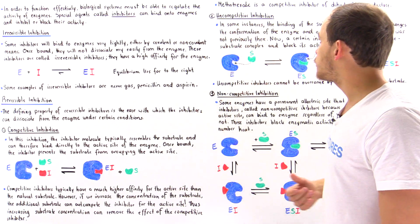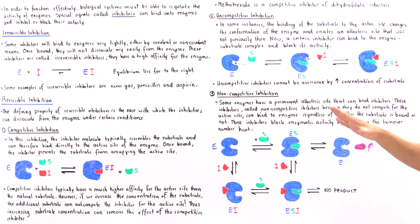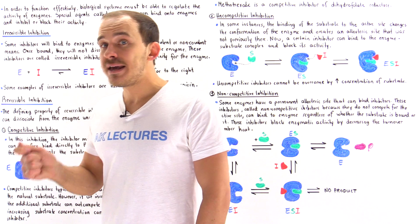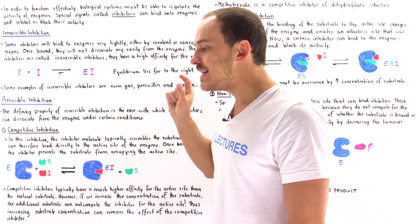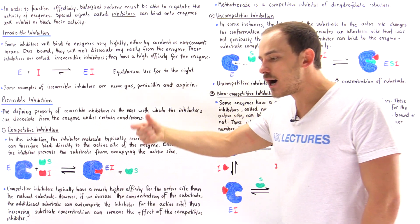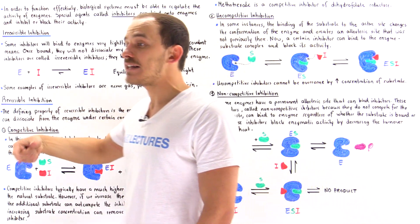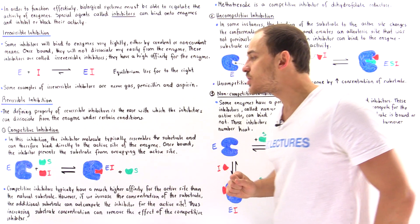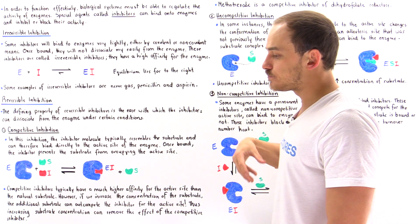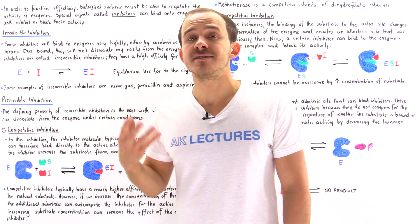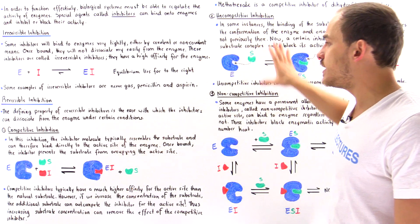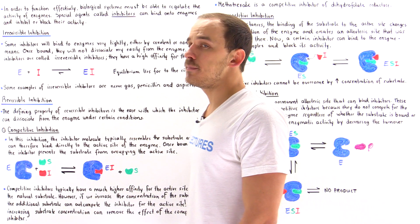There is also a fourth type of inhibition known as mixed inhibition. In mixed inhibition, the inhibitor decreases the affinity of the active site for the substrate and also decreases the turnover number of the enzyme. This is a much more complex type of inhibition than the other three forms.